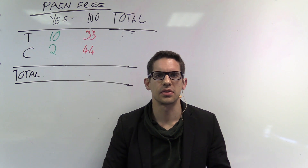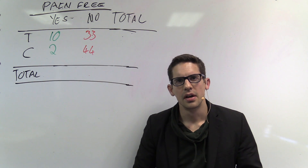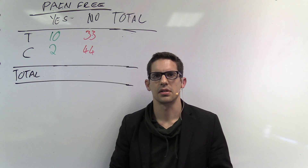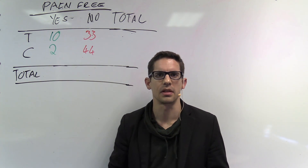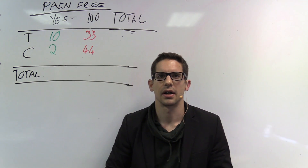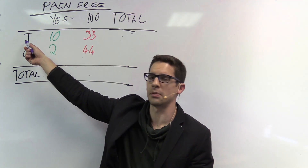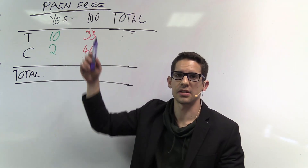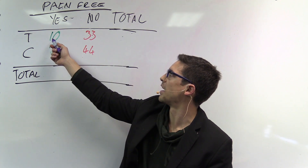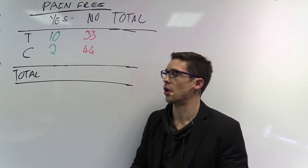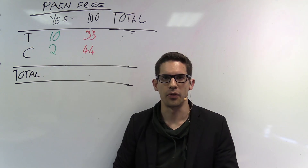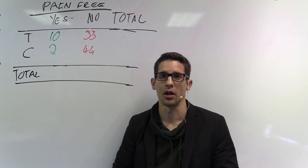Before answering the questions, let's look at the data given. The contingency table won't always be complete, so sometimes we need to fill it in ourselves. T stands for treatment group and C for control group. In the treatment group, 10 patients were pain-free and 33 were not pain-free after acupuncture. In the control group, 2 were pain-free and 44 were not pain-free after the acupuncture.